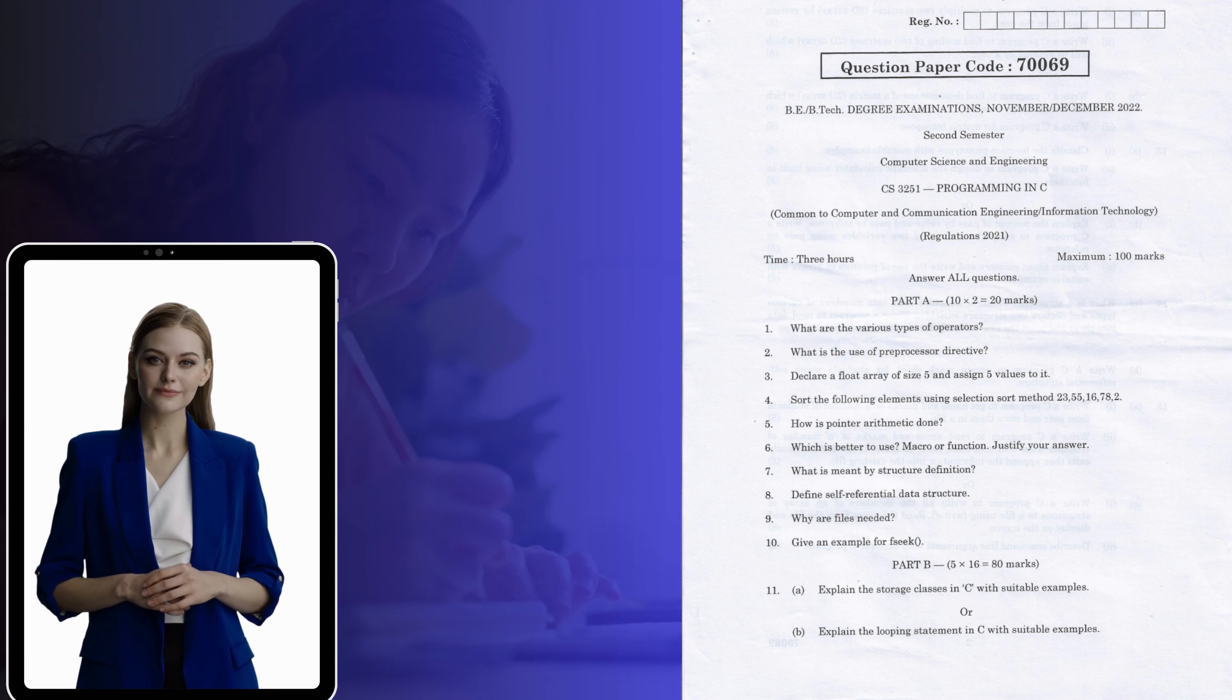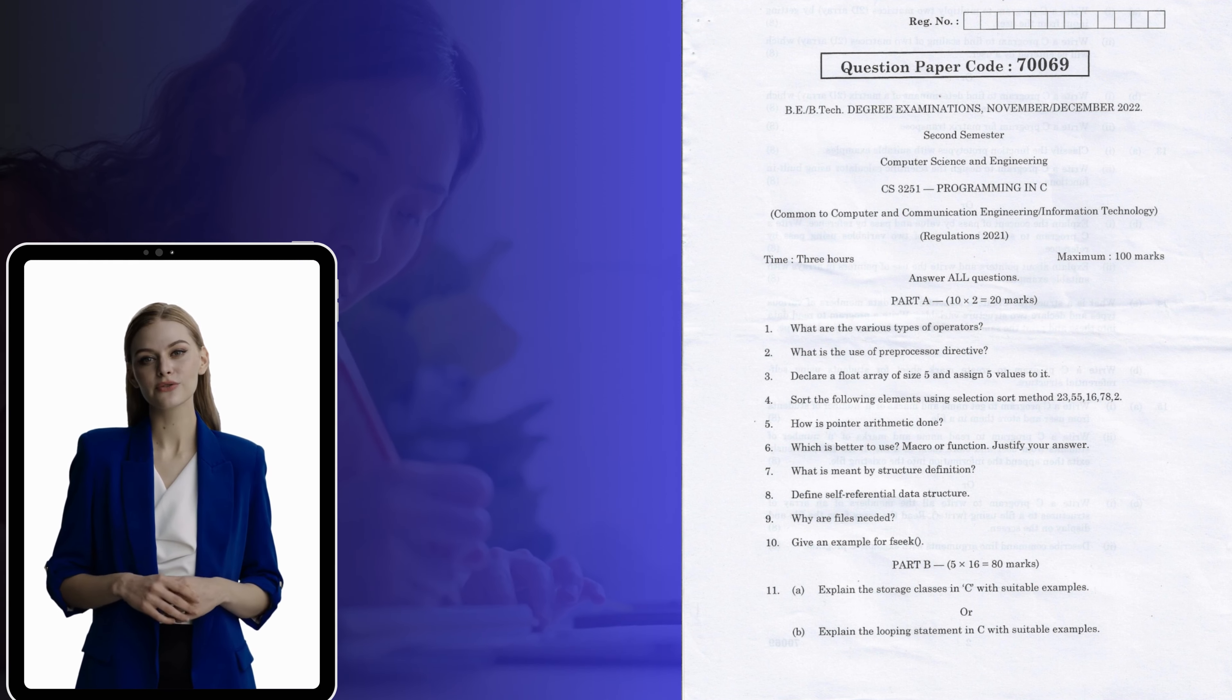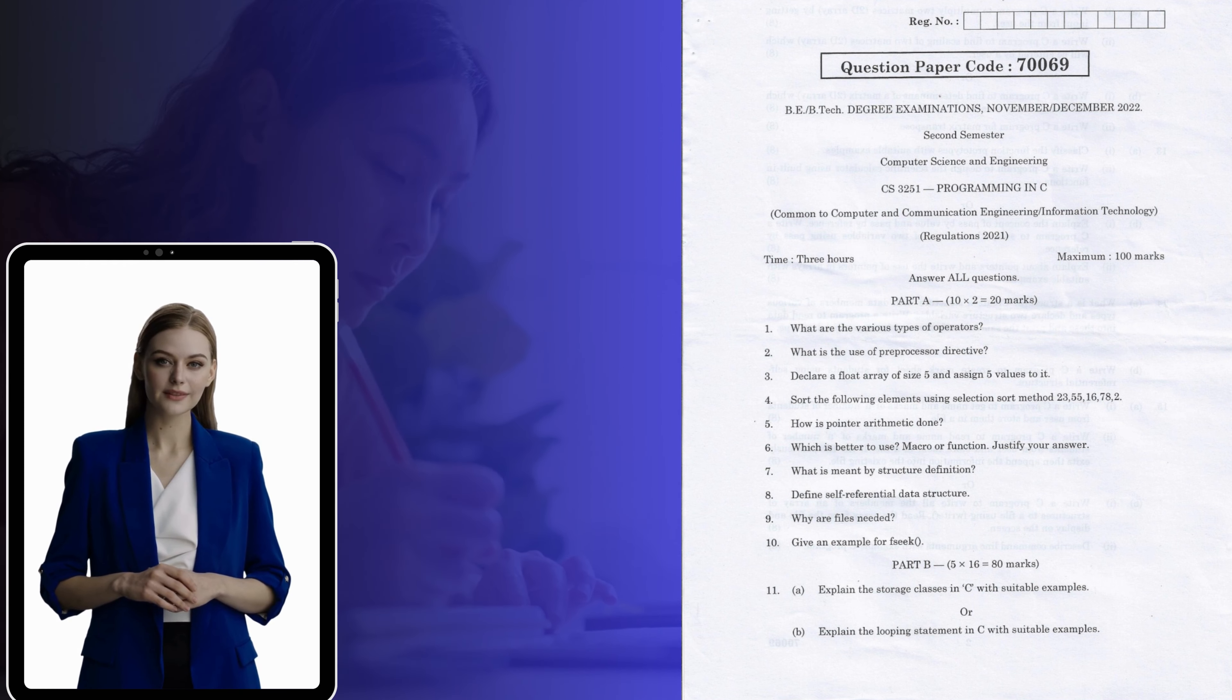6. Which is better to use, macro or function? Justify your answer. 7. What is meant by structure definition? 8. Define self-referential data structure. 9. Why are files needed? 10. Give an example for fseek.